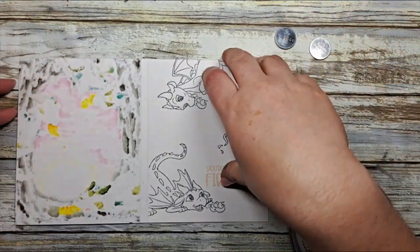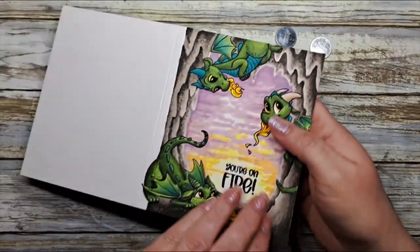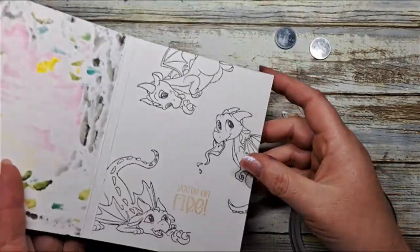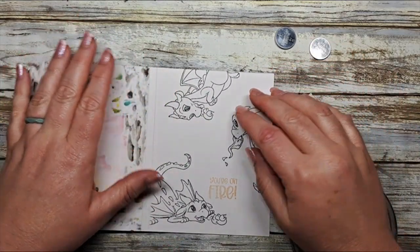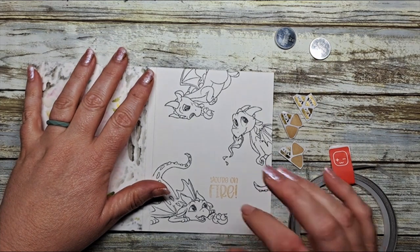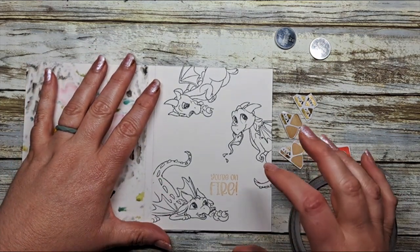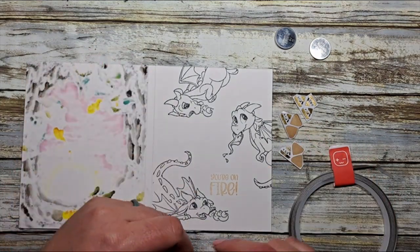When I design my cards I always stamp my images on the inside too. This helps with positioning so I know exactly where all of my light up elements are located.